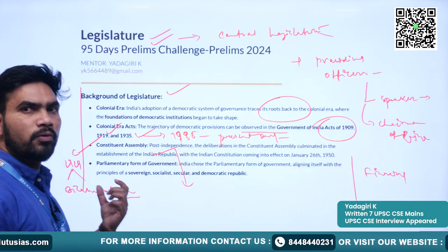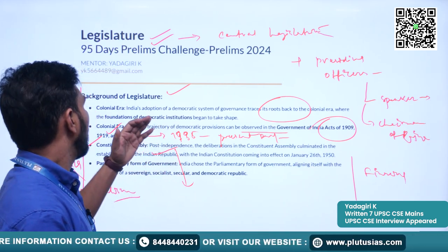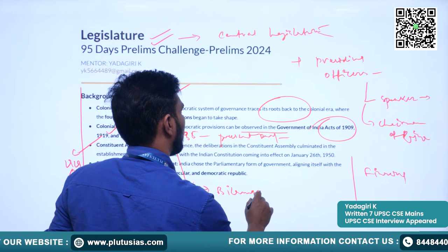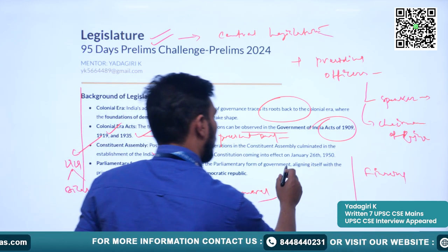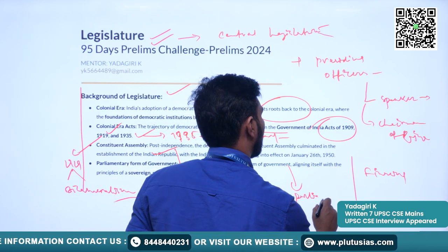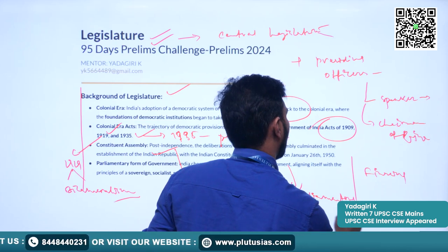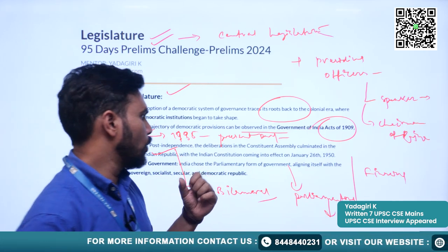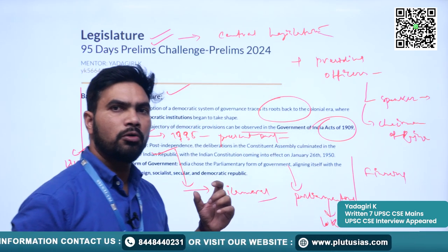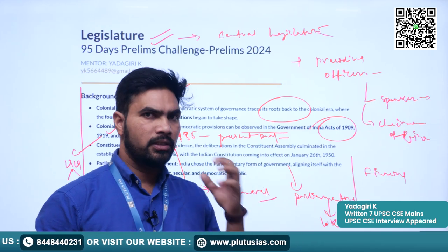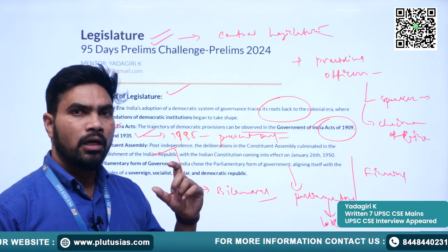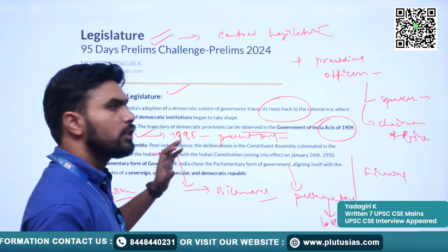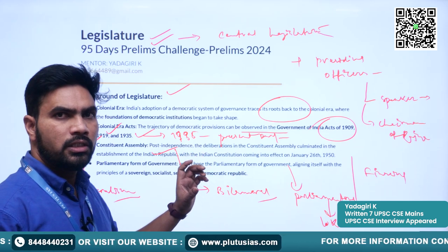Our Constitutional Assembly debates provided the source for the legislature; almost all members supported the bicameral system. Similarly, we also adopted the parliamentary form of government, in which the executive requires the support of the Lok Sabha. The executive — meaning the council of ministers headed by the prime minister — requires the support of the house of the people. For this reason, the legislature becomes very important.